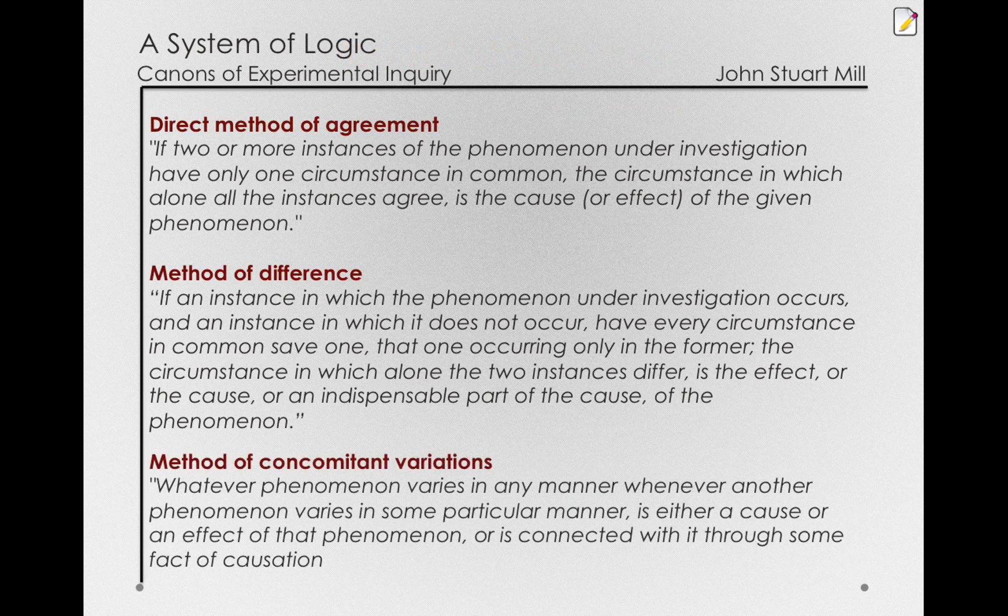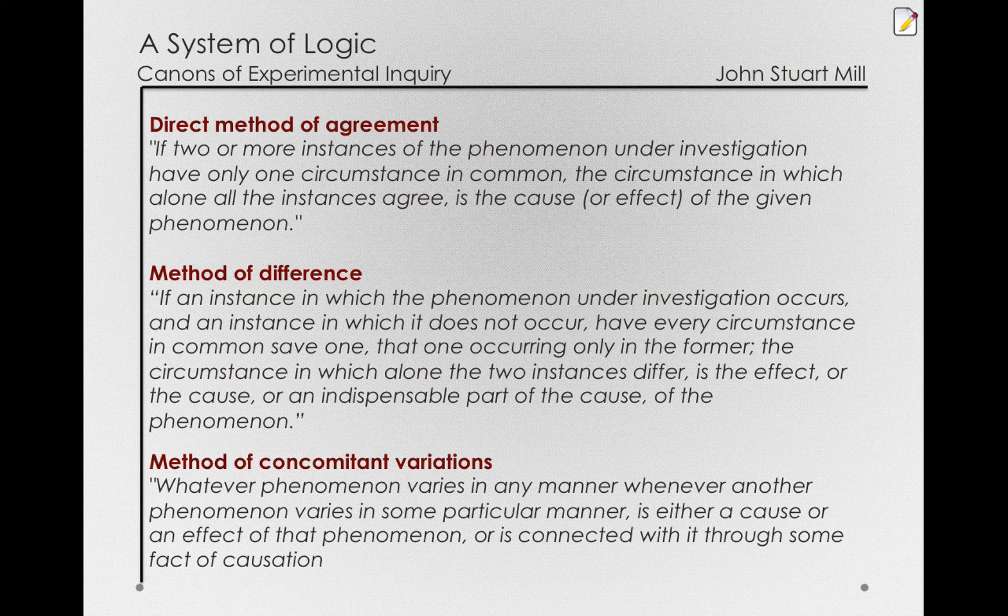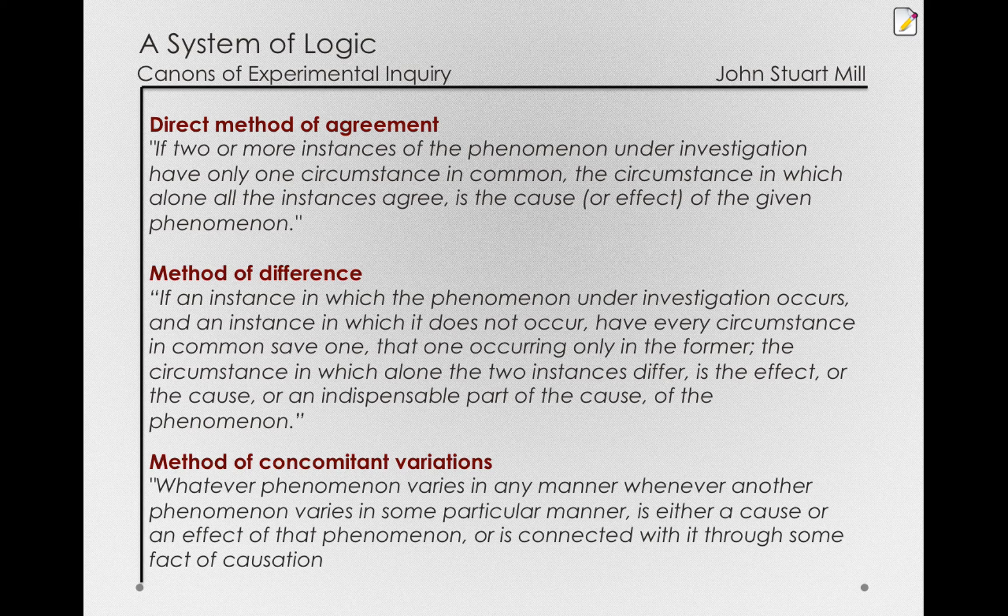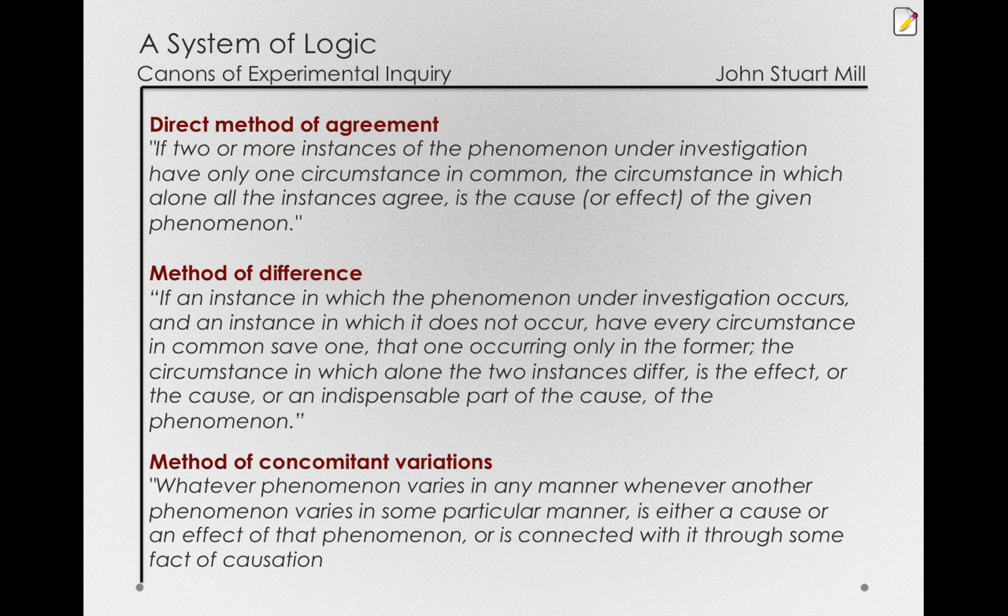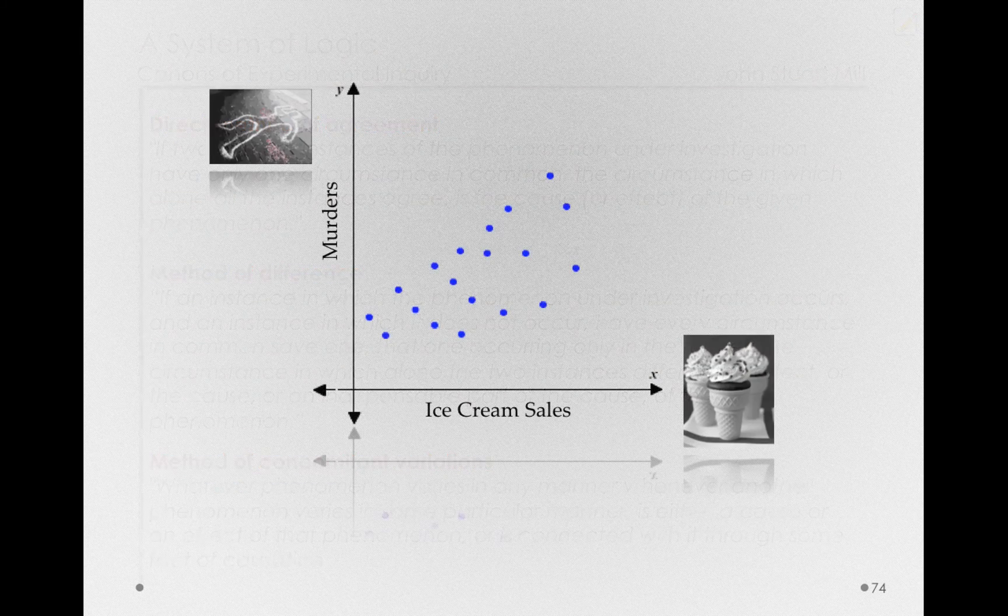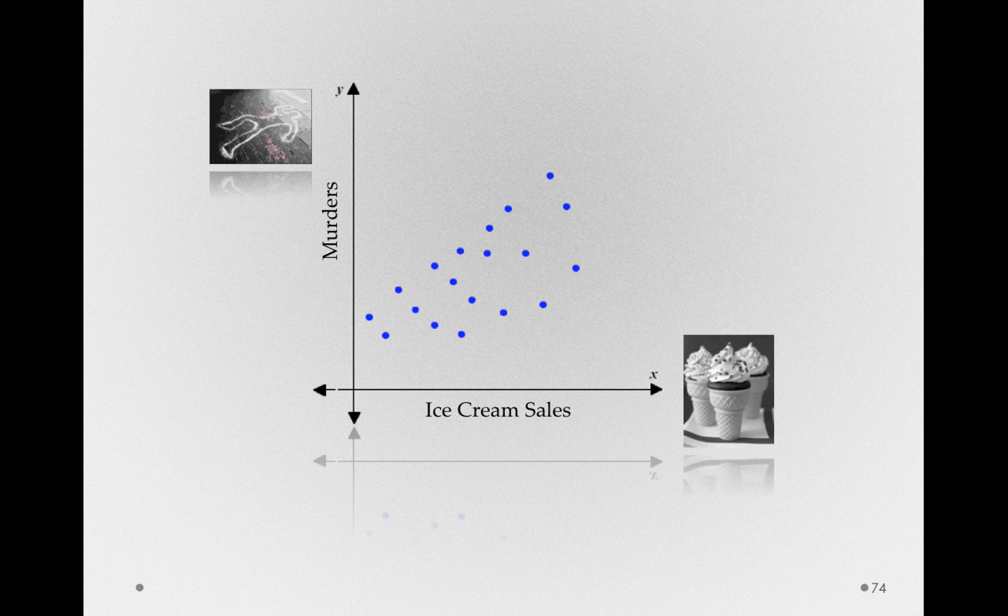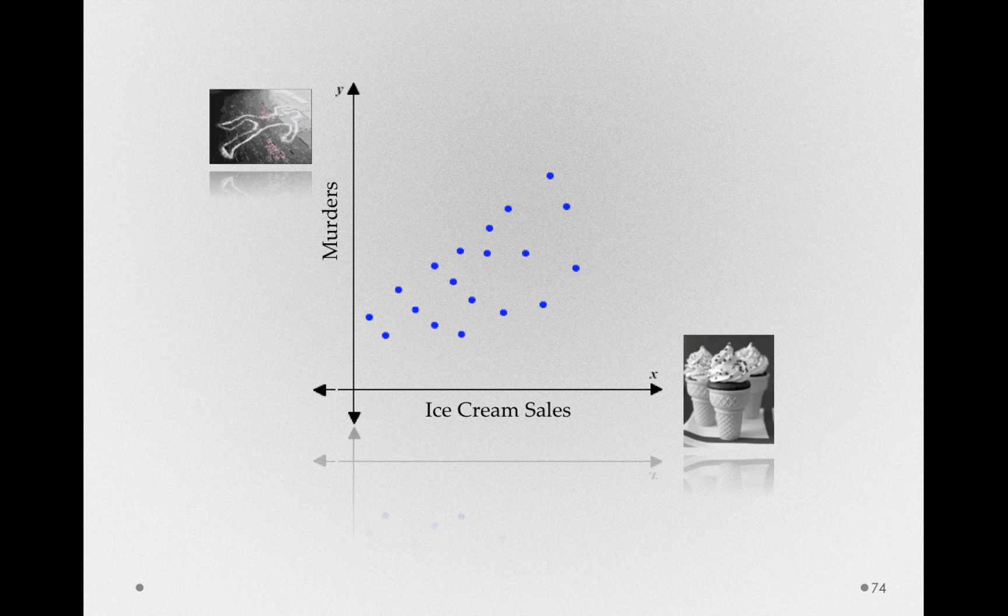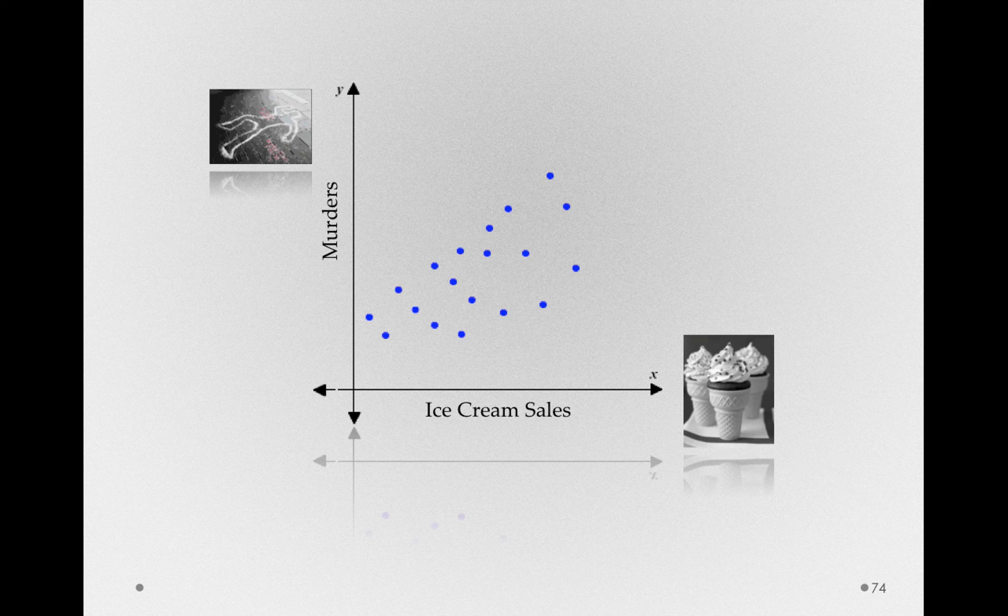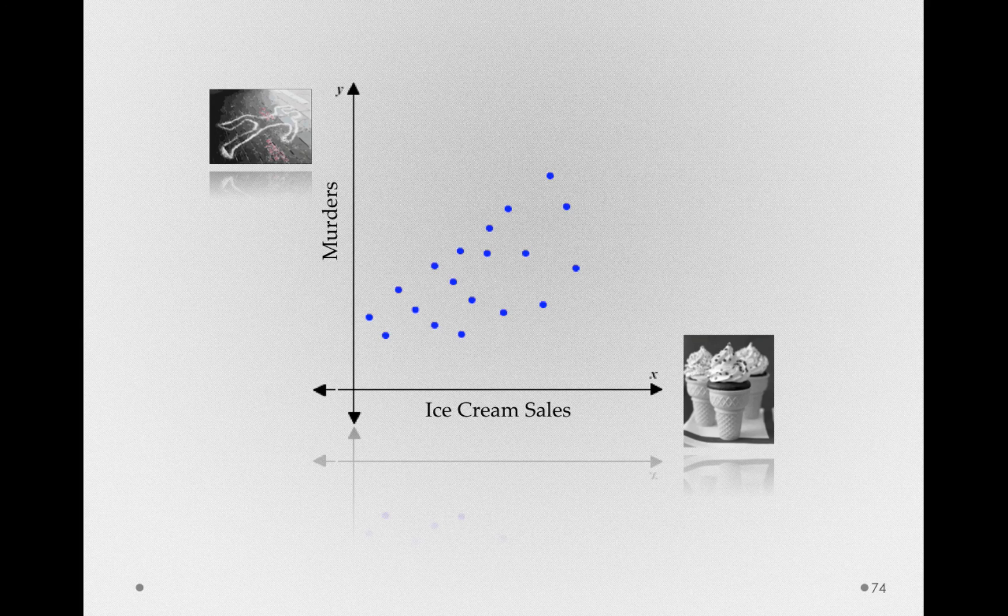Finally, the method of concomitant variation states that whatever phenomena varies in any manner, whenever another phenomenon varies in some particular manner, is either a cause or an effect of the phenomenon, or is connected with it through some fact of causation. To see this in a diagram, I'll simply return to that plot of ice cream sales and murders. Certainly, we can see that there is concomitant variation as ice cream sales increase, so too do murders, and we've already stated that this is likely explained by the temperature of a city. So these two are related through some fact of causation, not necessarily one causing the other, but some third factor that's resulting in the increase in both.